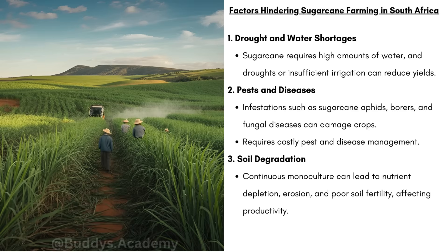Secondly, we can have pests and diseases. Infestations such as sugarcane aphids, borers and fungal diseases can damage crops. These pests feed on the sugarcane and can spread infections. There is also a need for costly pest and disease management — farmers need to spray chemicals and monitor their fields, which all costs money. Spending money to deal with pests and diseases increases production costs, and increased production costs lead to lower profits.